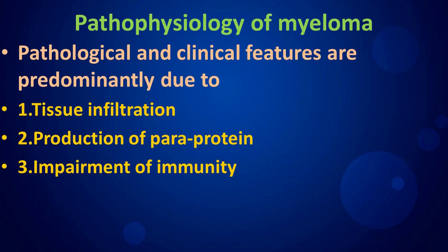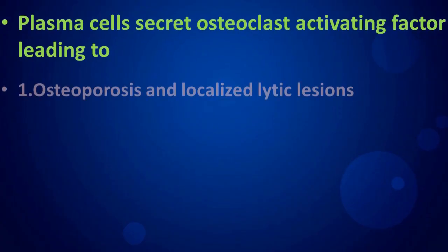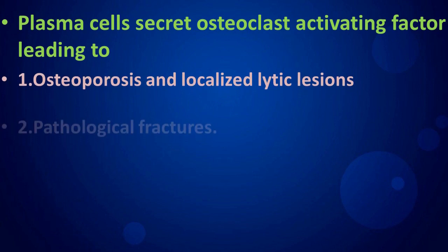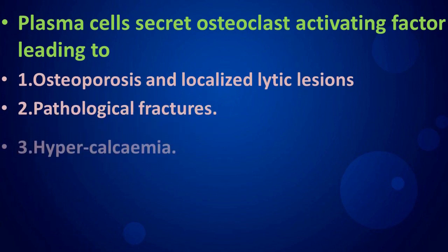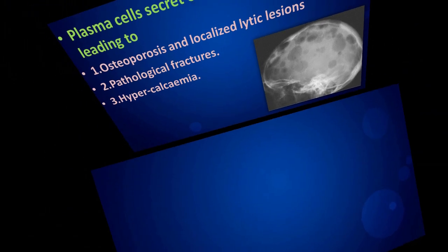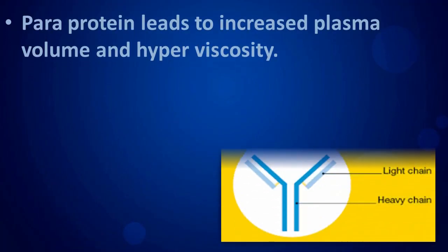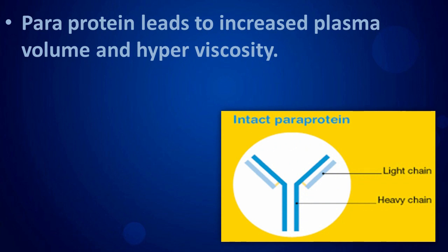Pathophysiology of myeloma: pathological and clinical features are predominantly due to tissue infiltration, production of paraprotein, and impairment of immunity. Plasma cells secrete osteoclast activating factor, leading to osteoporosis and localized lytic lesions, pathological fractures, and hypercalcaemia.